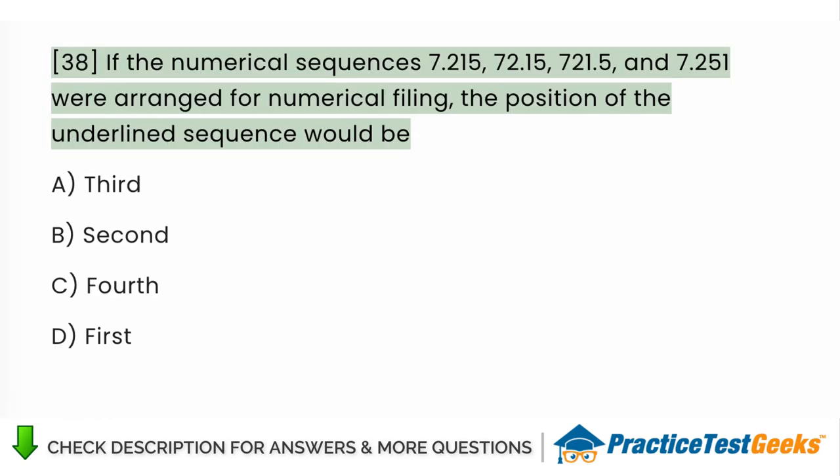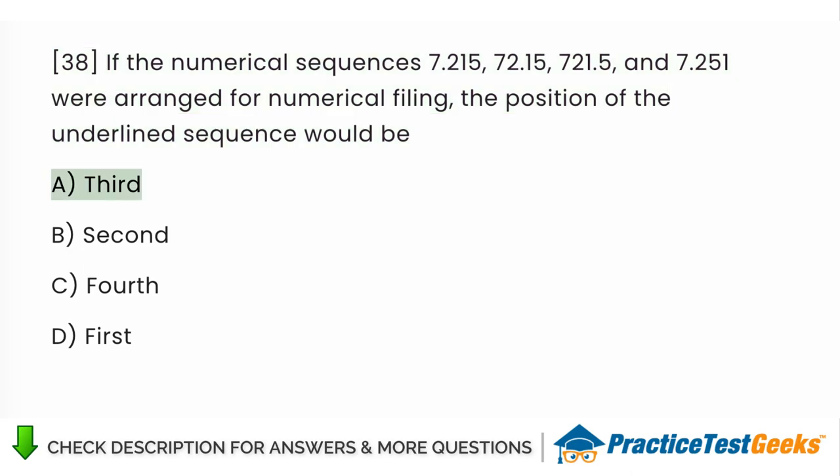If the numerical sequences 7.215, 72.15, 721.5, and 7.251 were arranged for numerical filing, the position of the underlined sequence would be A. Third B. Second C. Fourth D. First